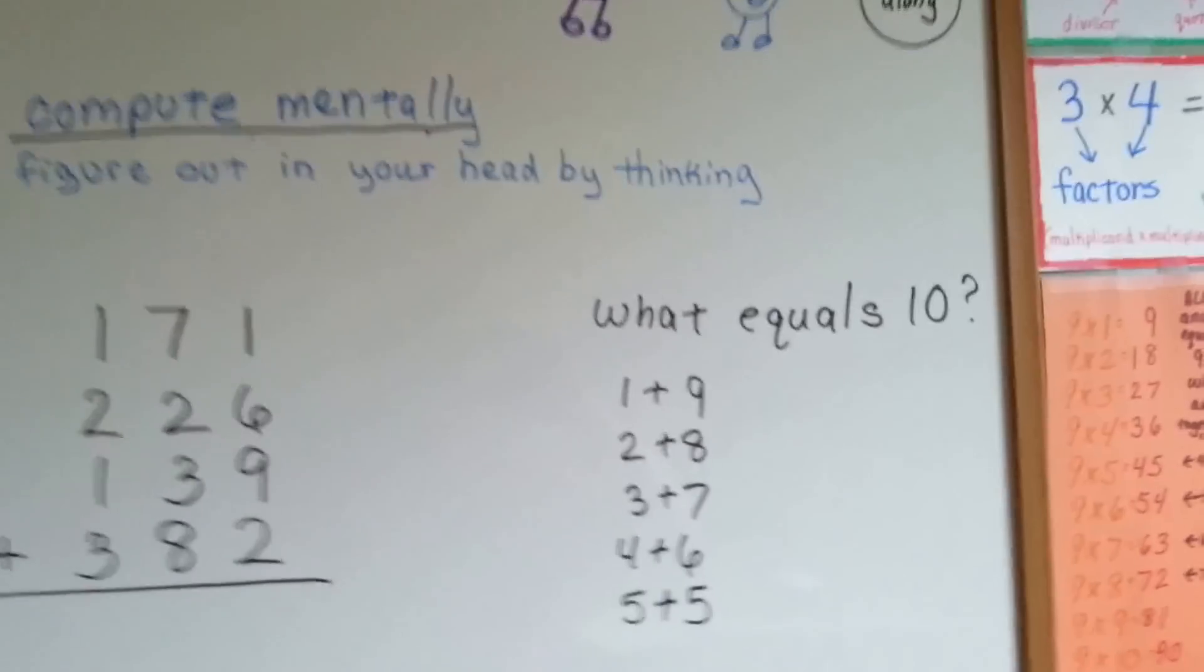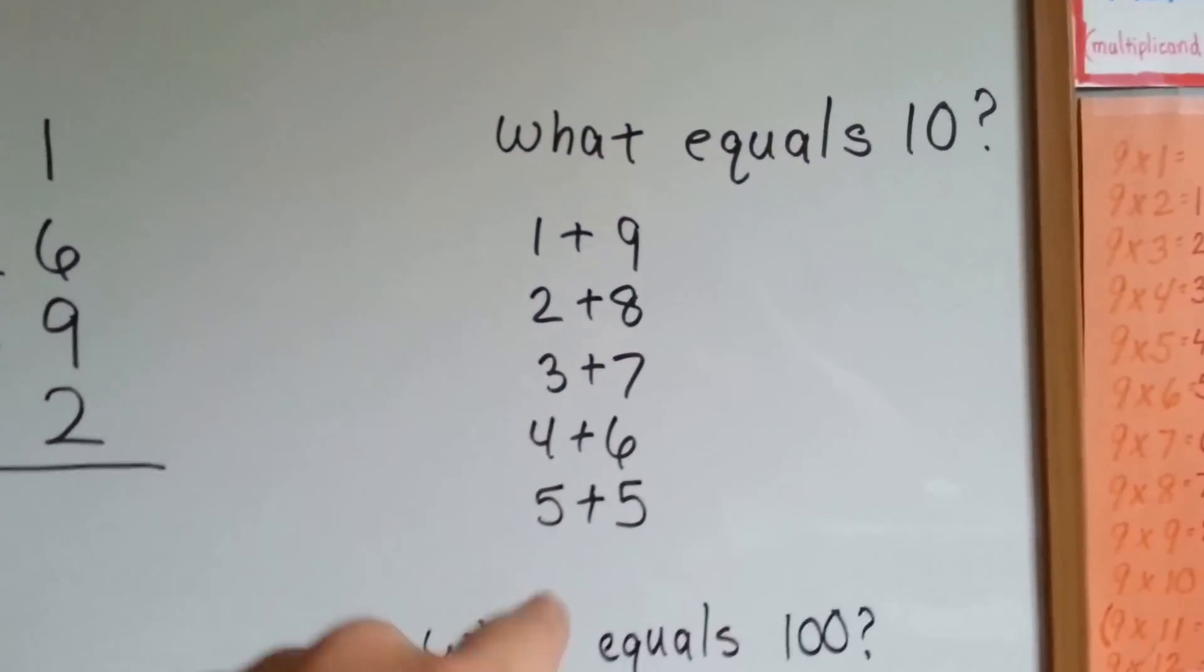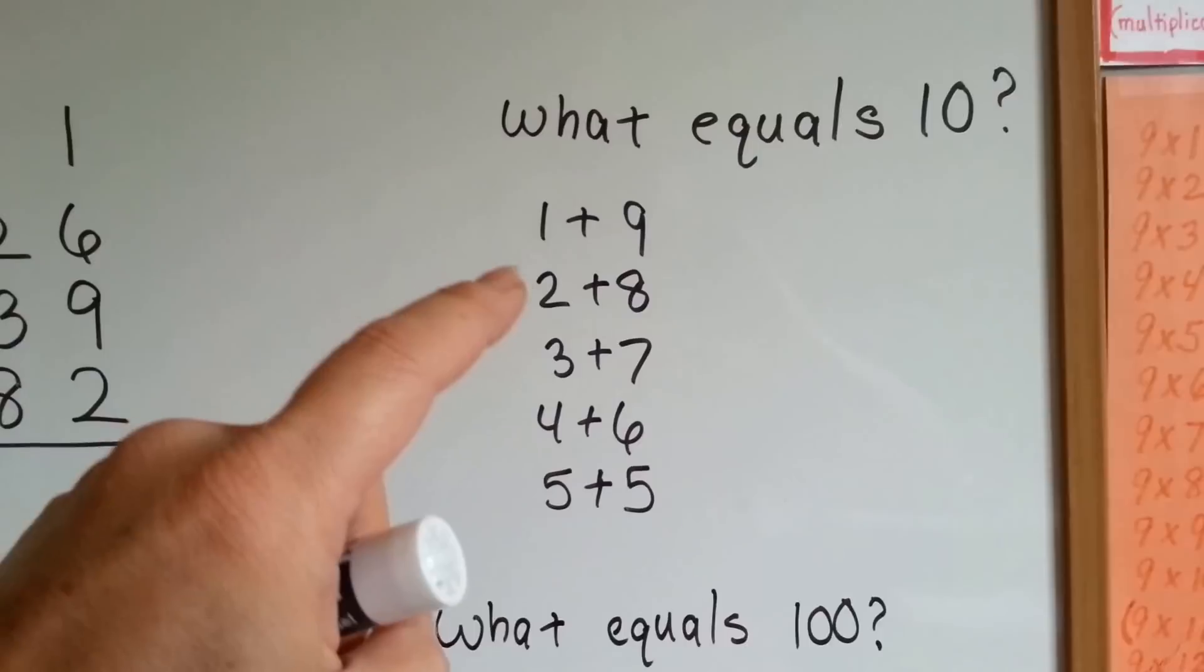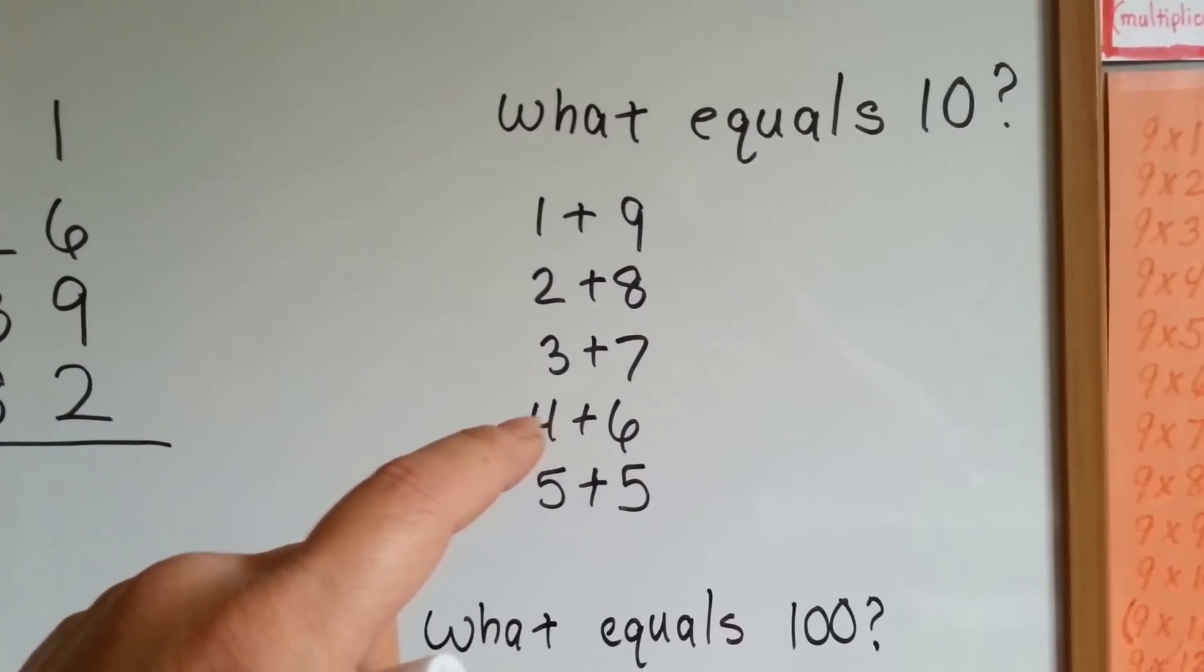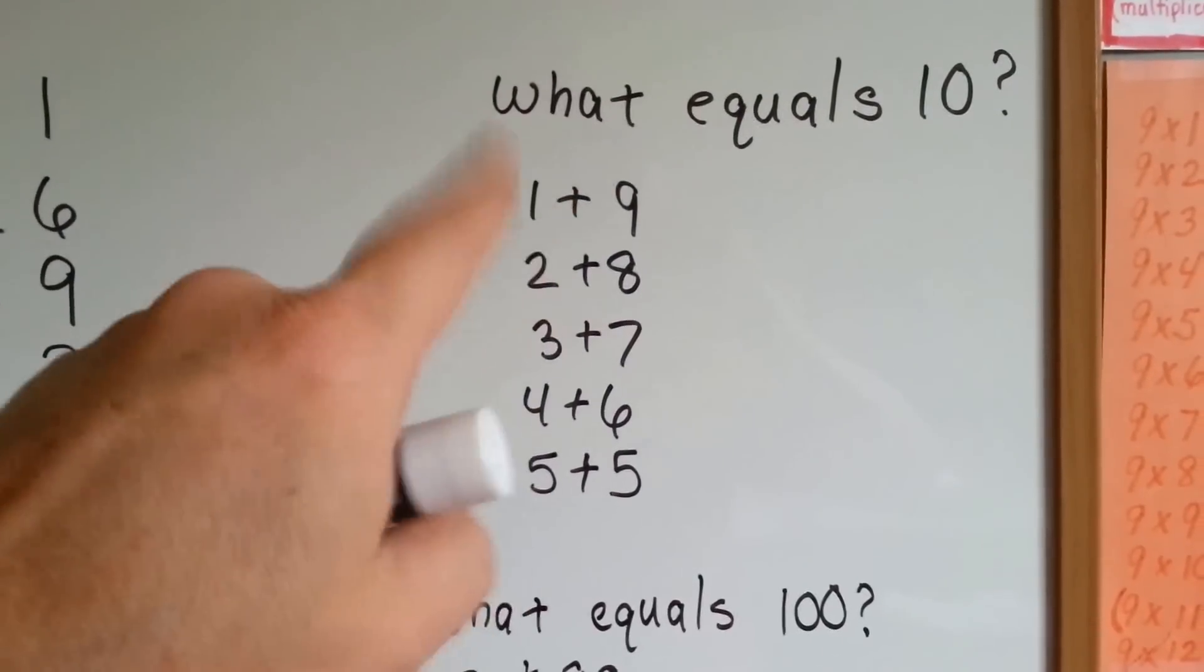They're numbers that get along. You can ask yourself, what equals 10? 1 plus 9, 2 plus 8, 3 plus 7, 4 plus 6, 5 plus 5, right? Those will equal 10.